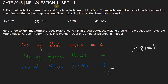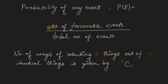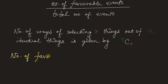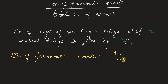Three balls are pulled out of the box at random without replacement and we need to find the probability that all three balls are red. The number of favorable events is the number of ways of selecting all three red balls out of four red balls, which is 4C3. The total number of events is the number of ways of selecting three balls out of 12 balls, which is 12C3.